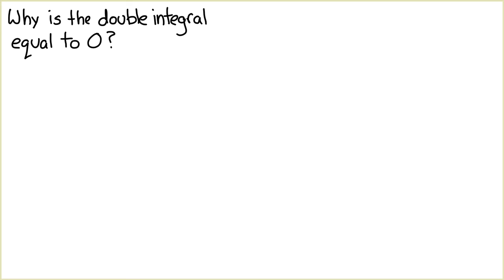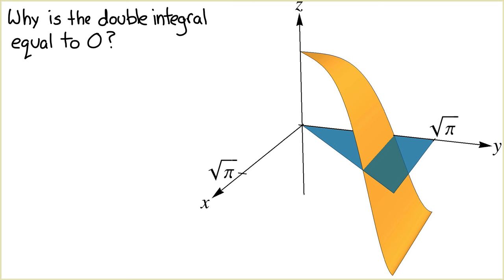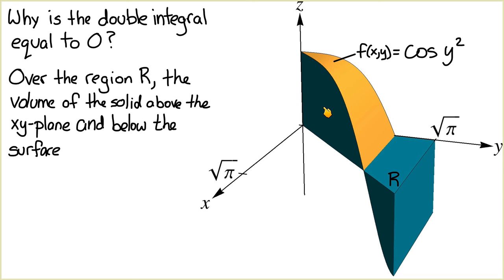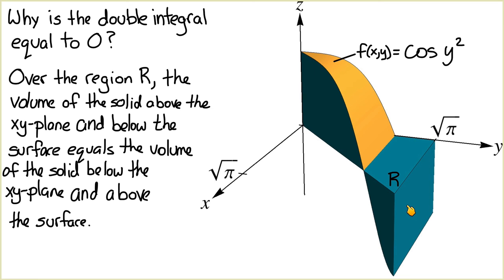The final question is: why does the double integral equal 0? Using a computer algebra system we plotted the graph of f(x, y) = cosine of y squared over the region R in the xy-plane. Part of the shaded volume is above the xy-plane and part is below the xy-plane. Over the region R, the volume of the solid above the xy-plane equals the volume below, so the net volume equals 0, which is why the double integral equals 0.